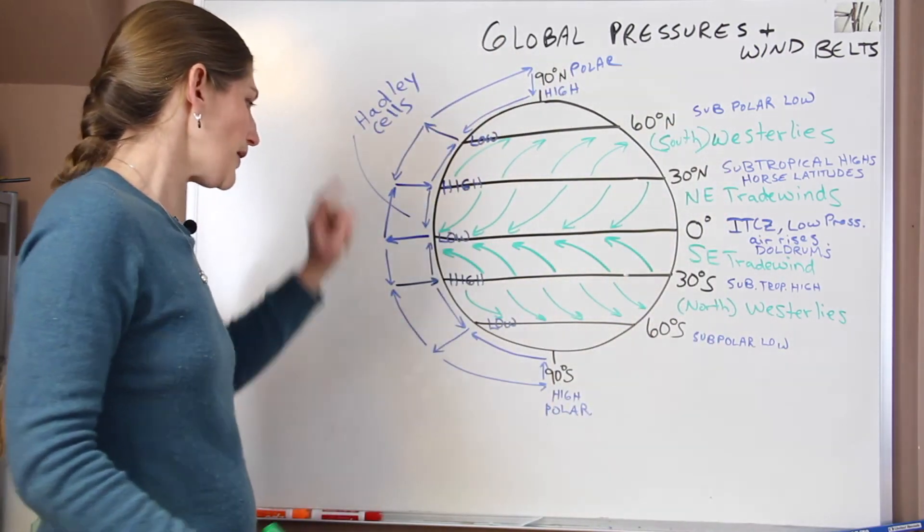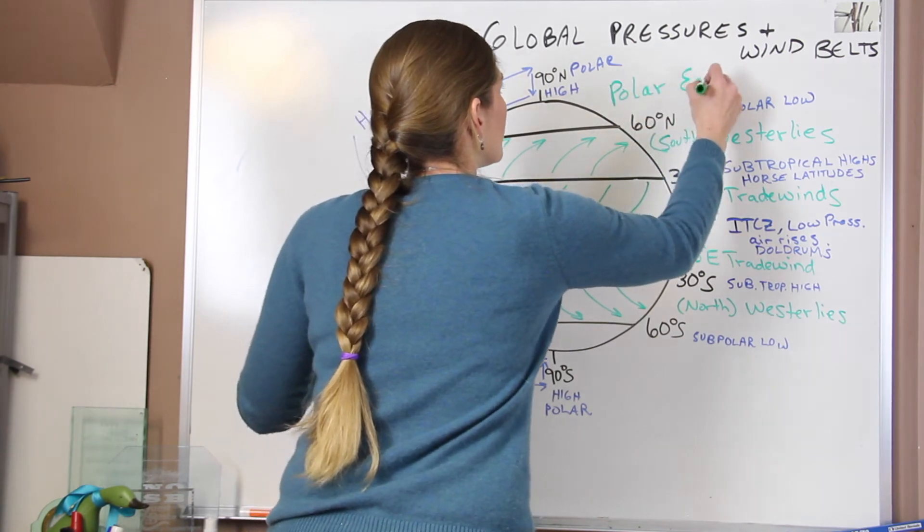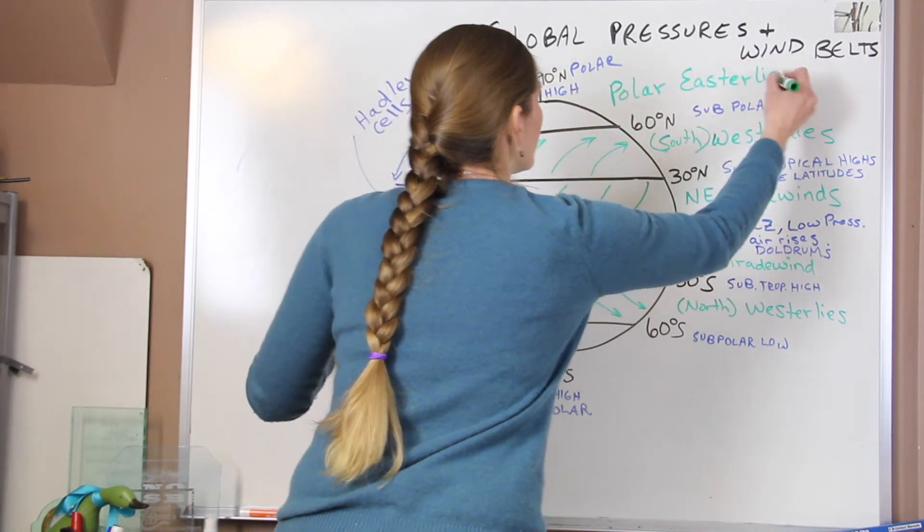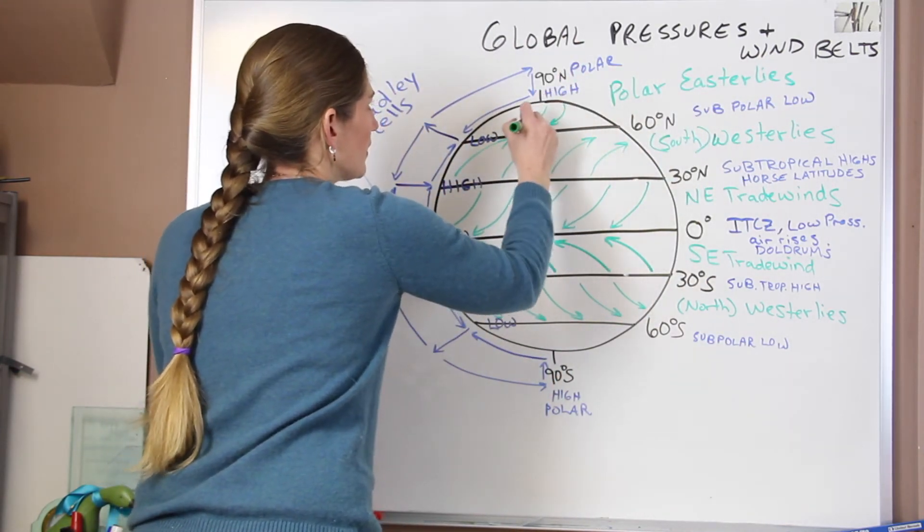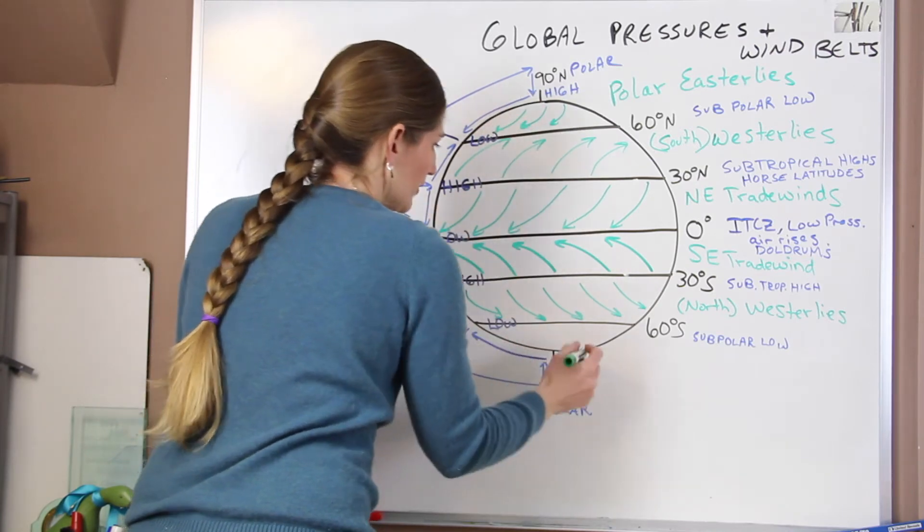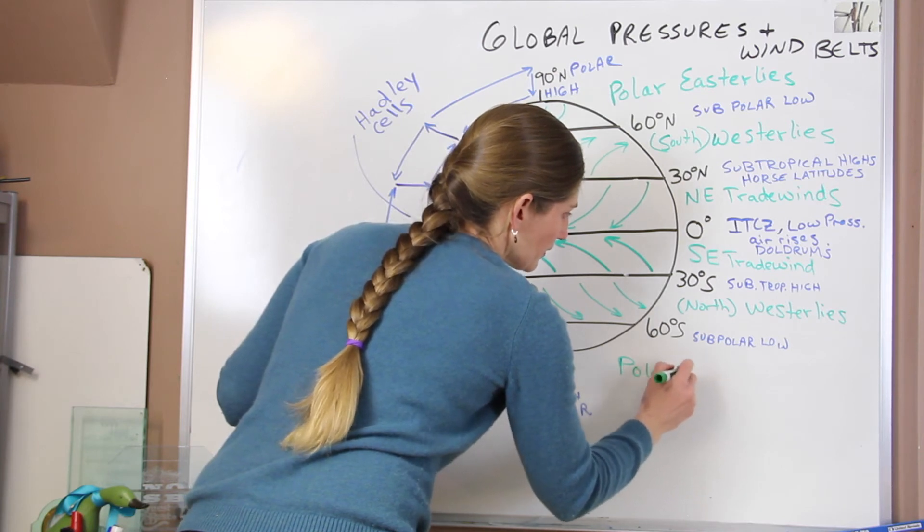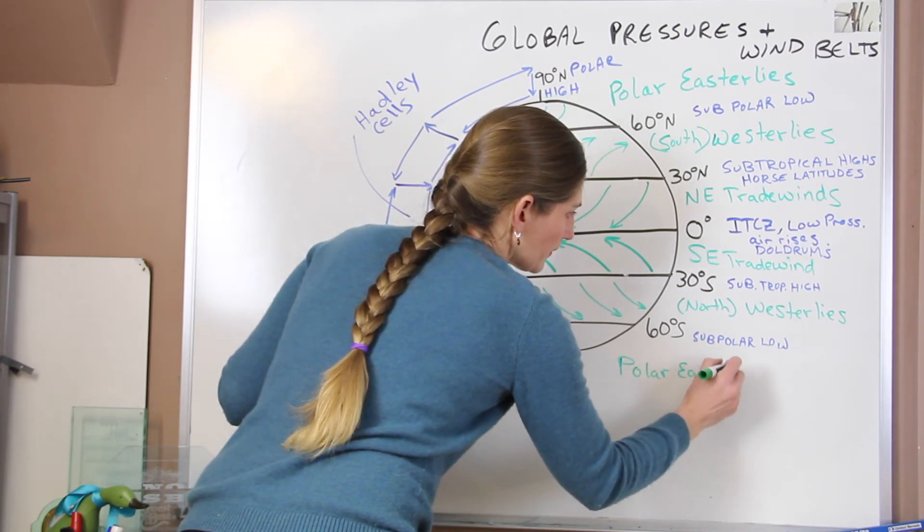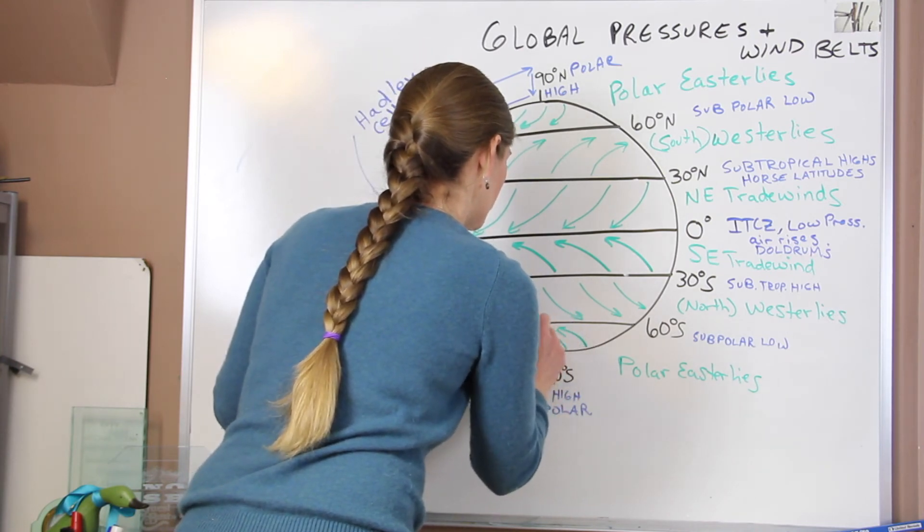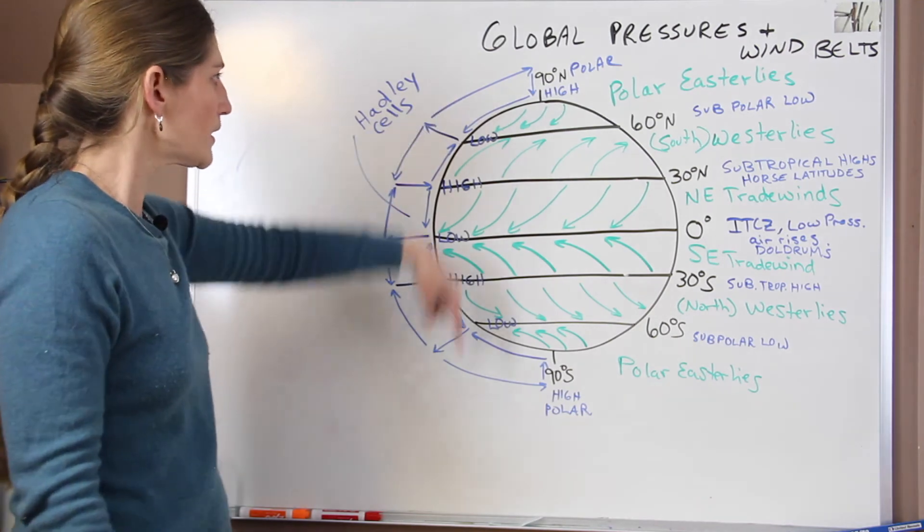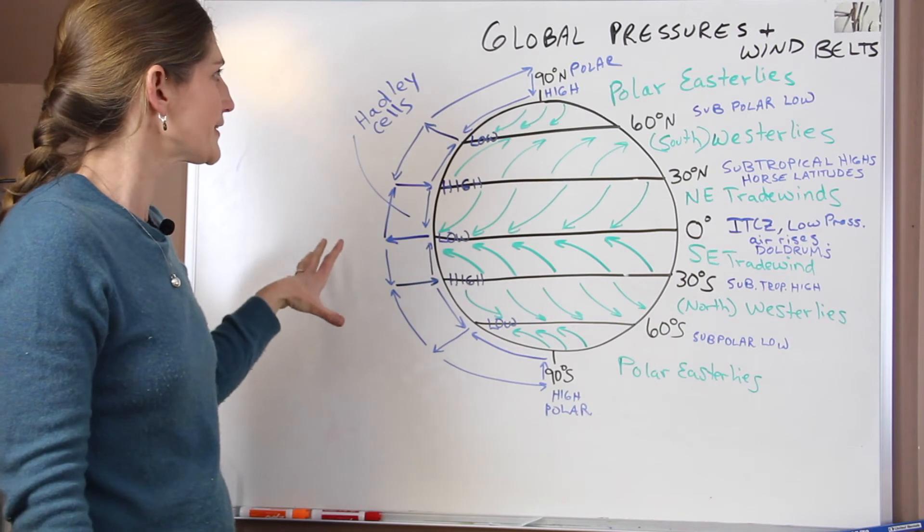And then the last thing we have are polar easterlies. So they're coming from the east, but up by the poles. So northeast. And then we have polar easterlies. And then these ones are moving just like that. So the green shows our global wind belts. The blue shows our global pressure systems.